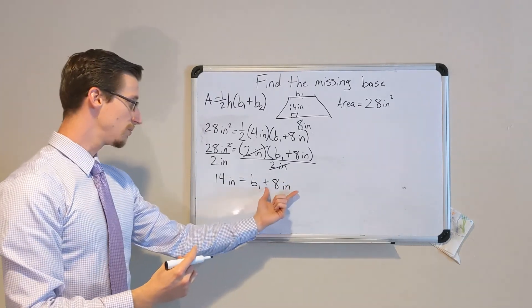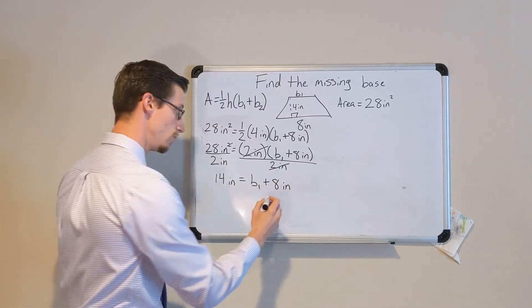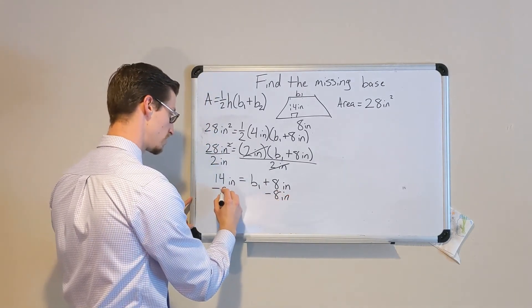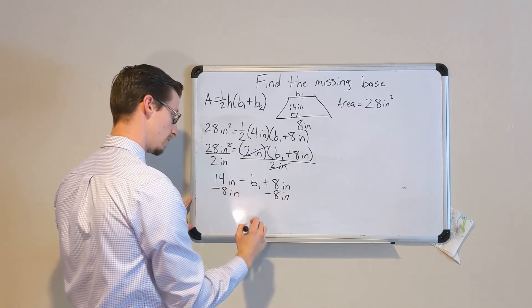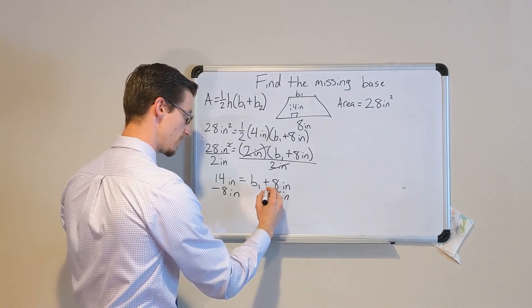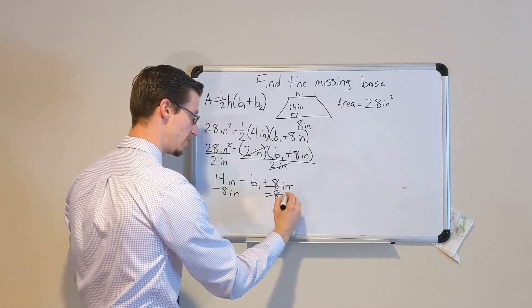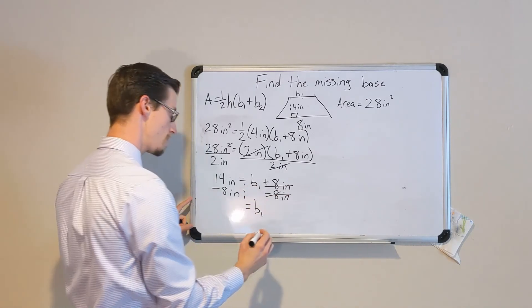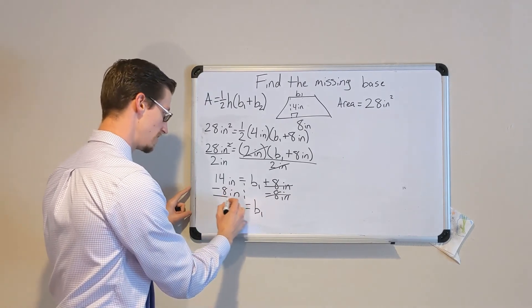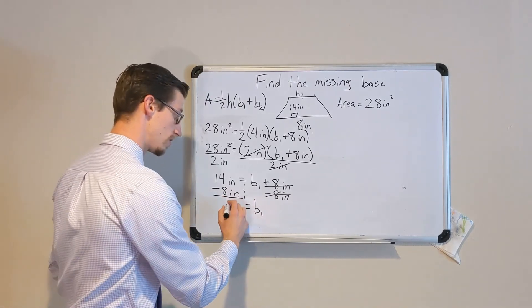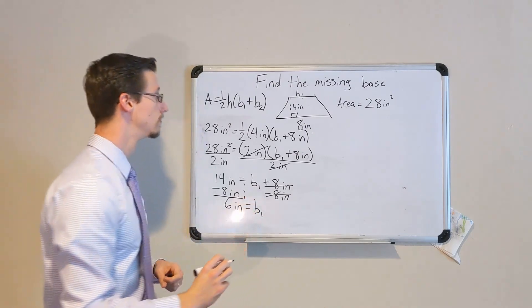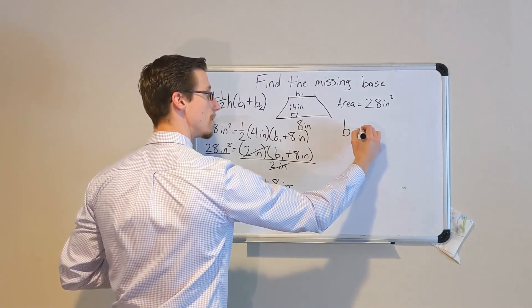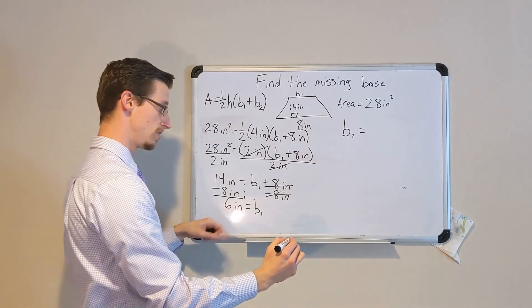All right, now we just need to get rid of this addition of 8 inches. We do that by subtracting 8 inches on both sides. We know that the plus 8 inches and the minus 8 inches cancel out. And we're just left with base 1. And 14 inches minus 8 inches should leave us with 6 inches. So base 1 is equal to 6 inches.